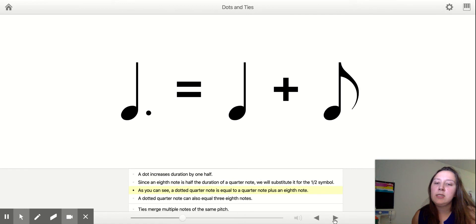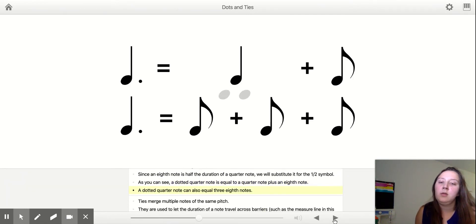As you can see the dotted quarter note is equal to a quarter note plus an eighth note. So dotted quarter note equal to quarter note plus an eighth note, that's what we just said. You can also break it down, break down this quarter note into two eighth notes, and see that dotted quarter note is equal to three eighth notes in total.